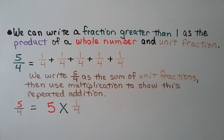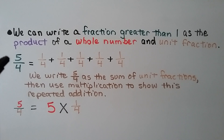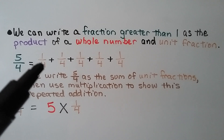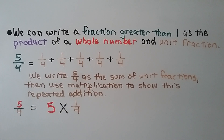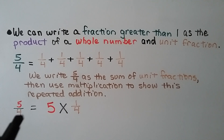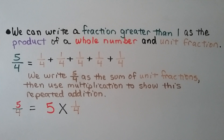We can write a fraction greater than 1 as the product of a whole number and a unit fraction. Here we have 5/4. This numerator is larger than the denominator, so we know this is a fraction greater than 1. We can write it as the product of a whole number and unit fraction. 5/4 is equal to 1/4 plus 1/4 plus 1/4 plus 1/4 plus 1/4. We write 5/4 as the sum of unit fractions, then use multiplication to show this repeated addition: 5/4 is equal to 5 times 1/4.